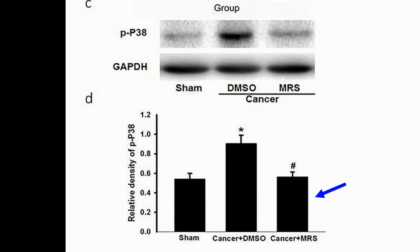To verify whether the activation of p38-MAPK is regulated by the P2Y12 receptor in CIBP, the expression of p38-MAPK protein in the dorsal horn was examined. Using the Western blot approach, it was revealed that the level of p38-MAPK increased in the cancer group but was partially suppressed by the antagonist.